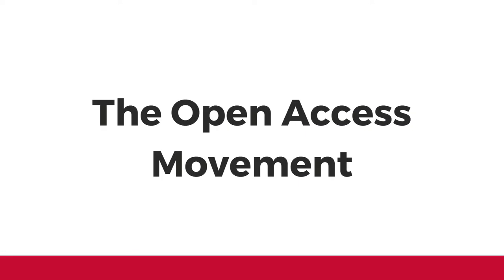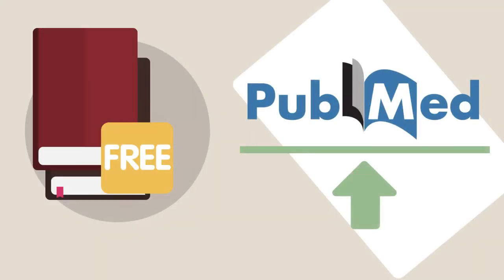Open access calls for open and free access to research outputs. It began around the early 90s, along with the public availability of the internet through the world wide web, though some scholars would argue that they've been trying to freely share scholarship with the public since the invention of writing itself. Open access is often described as having two sides: it can be accomplished by publishing in an open access journal or with an open monograph publisher, or by self-archiving works in an online open access repository.